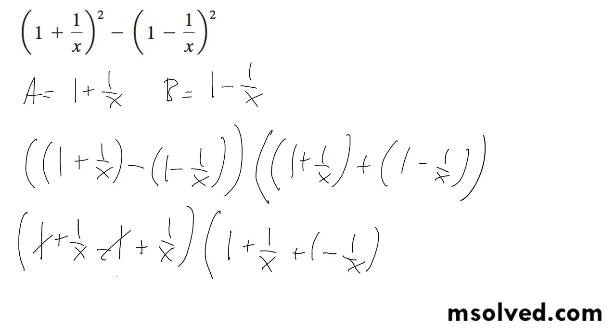Over here the ones cancel out, the 1 over x terms add together to become 2 over x, and over here the 1 over x terms cancel out and you get 2.